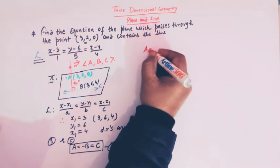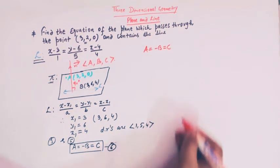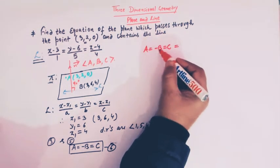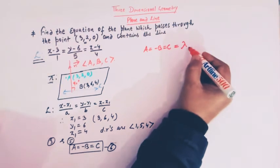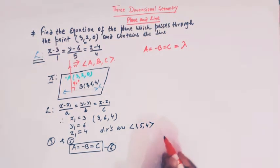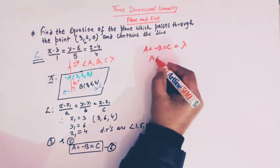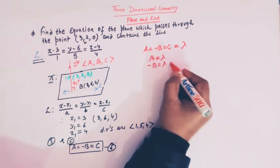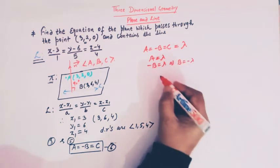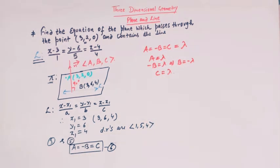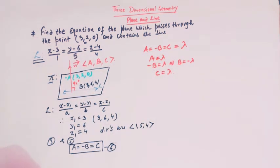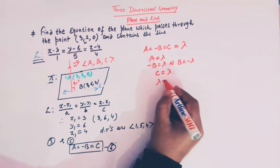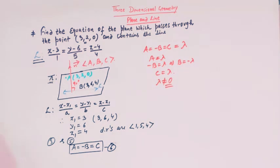We have the relation A = minus B = C. Let us set these three terms equal to some scalar lambda, where lambda is not equal to zero. Then A = lambda, minus B = lambda so B = minus lambda, and C = lambda. We have now expressed A, B, C — the direction ratios of the normal — in terms of scalar lambda.